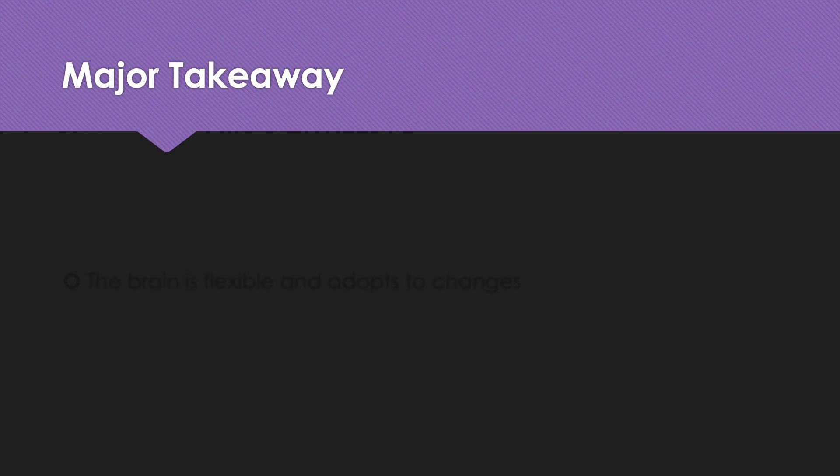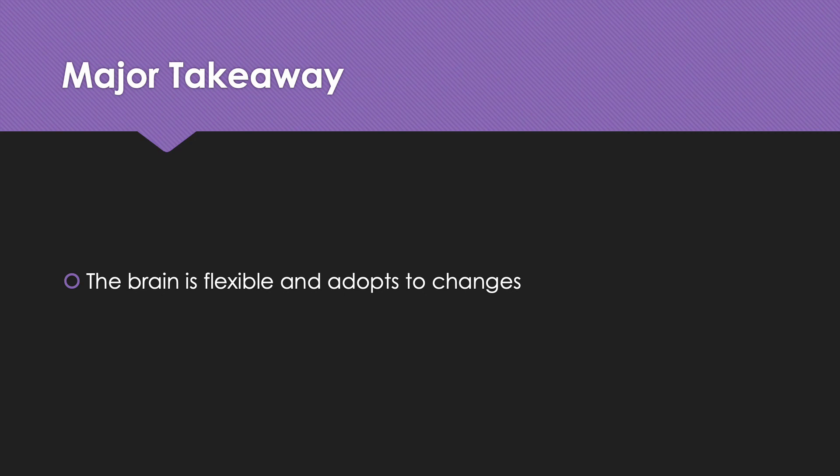The major takeaway is that our brain remains flexible with age and adapts to changes. Although there may be age-related differences in brain structures, the brain is ready to adapt and change to deal with the tasks at hand. Thanks for watching.